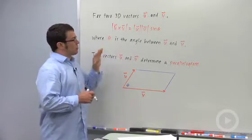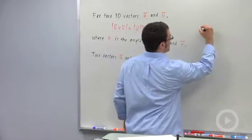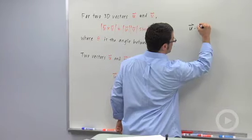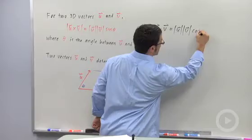Now this result probably looks very familiar to you. It's very similar to the result about the dot product. The dot product u dot v equals the magnitude of u times the magnitude of v cosine theta.